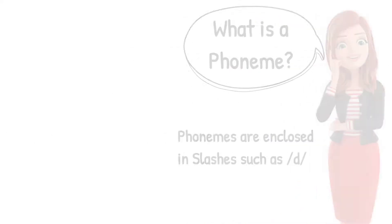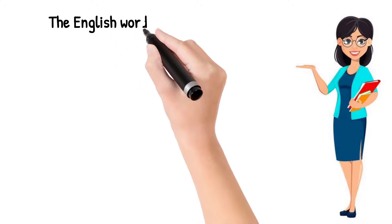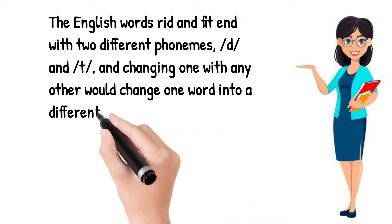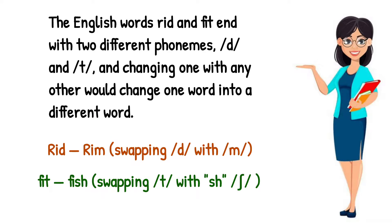Now let's look at the examples of phonemes. The English words 'rid' and 'fit' end with two different phonemes: /d/ and /t/. Changing one with the other would change one word into a different word. So 'rid' ends with the phoneme /d/, and 'fit' ends with the phoneme /t/. If we swap those phonemes, 'rid' becomes 'rit' — a new word with a different meaning.